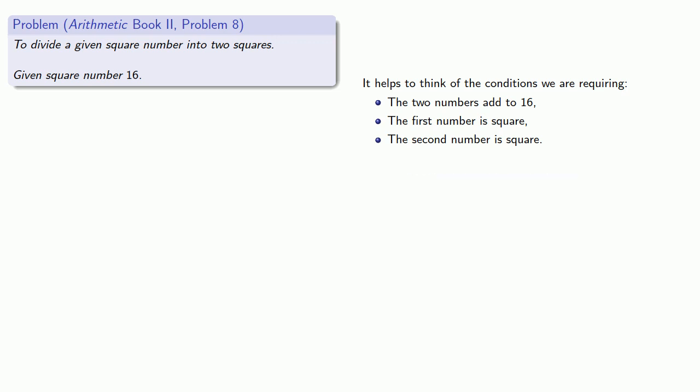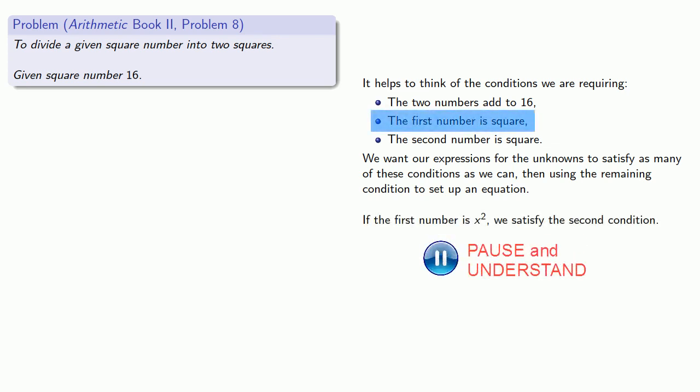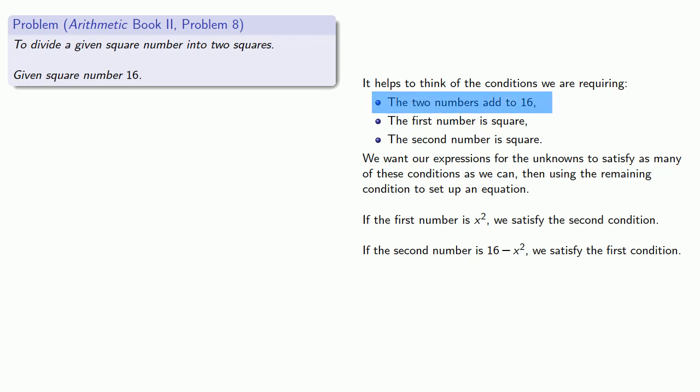We want our expression for the unknowns to satisfy as many of these conditions as we can, then use the remaining condition to set up an equation. If the first number is x squared, we automatically satisfy the second condition. We don't have a second variable to use for the unknown, so we can't make our second number a square, but we could make it 16 minus x squared, which satisfies the first condition because our two numbers will add to 16. So Diophantus begins: let the numbers be x squared and 16 minus x squared.